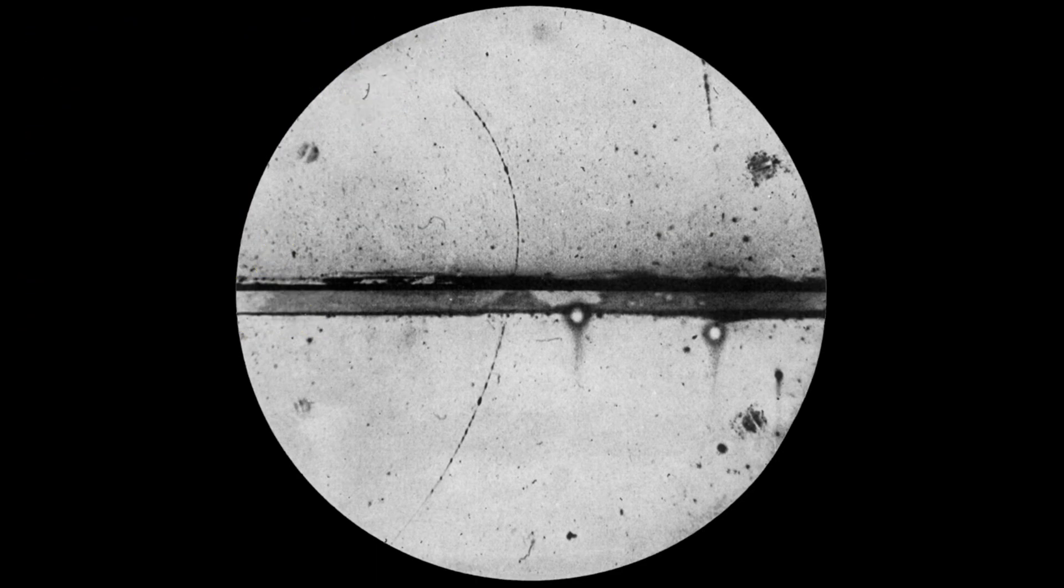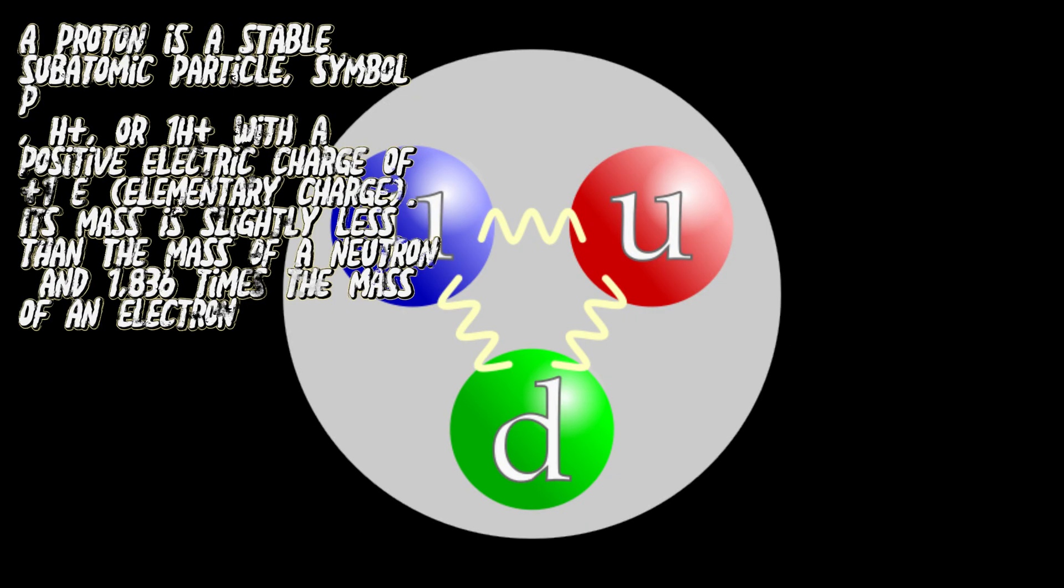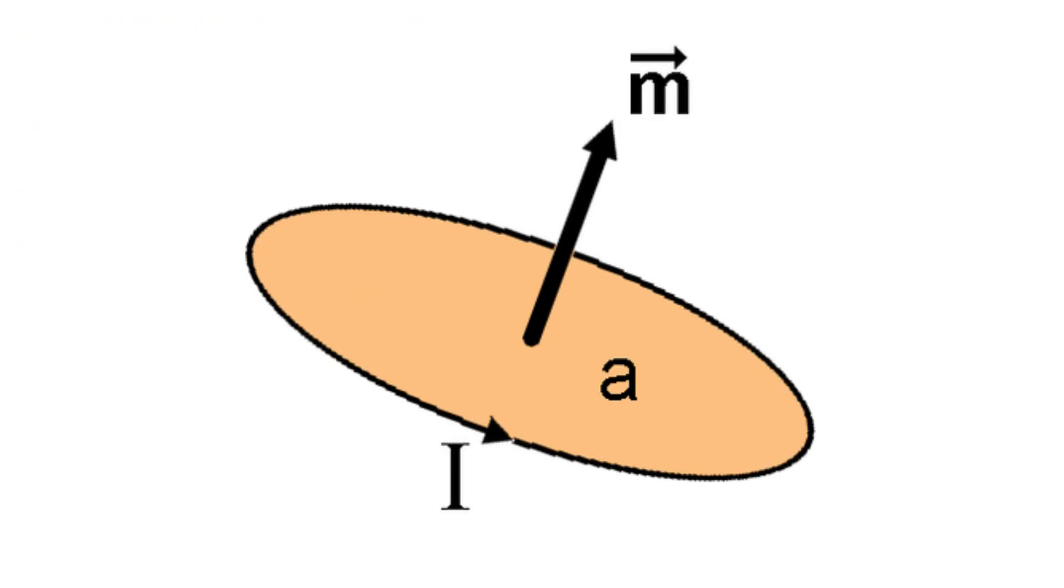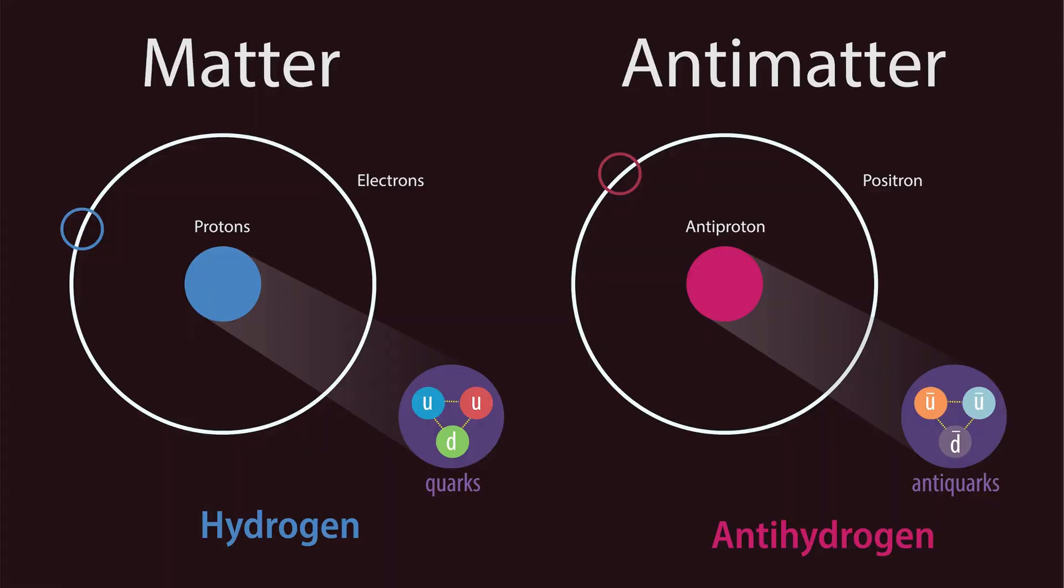It is composed of subatomic particles that have the mass, electric charge, and magnetic moment of the electrons, protons, and neutrons of ordinary matter, but for which the electric charge and magnetic moment are opposite in sign.